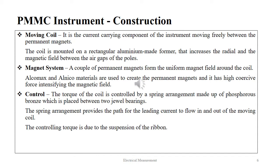The magnet system consists of a couple of permanent magnets forming the uniform magnetic field around the coil. Alcomax and Alnico materials are used to create the permanent magnet, and it has a high coercive force intensifying the magnetic field. The torque of the coil is controlled by a spring arrangement made up of phosphor bronze, placed between two jewel bearings. The spring arrangement provides the path for the leading current to flow in and out of the moving coil. The controlling torque is due to the suspension of the ribbon.